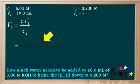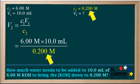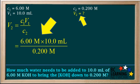And we can add in our given values here. The initial concentration, C1, is 6 molar. The initial volume, V1, is 10 milliliters. And the final concentration, C2, is 0.2 molar. Now we can calculate the value for the final volume, V2.